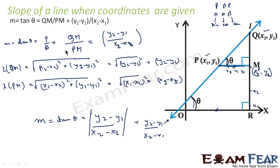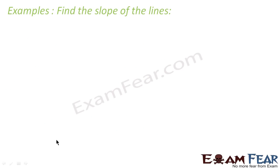So, if we are given a line with coordinates (x1, y1) and (x2, y2), we can find the slope using: tan θ = (y2 − y1) / (x2 − x1). We now have two formulas: if we know the angle the line makes with the positive x-axis, use m = tan θ; if we know two coordinates, use m = (y2 − y1) / (x2 − x1).